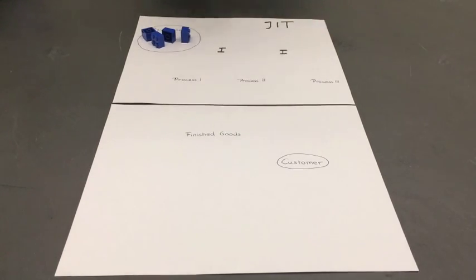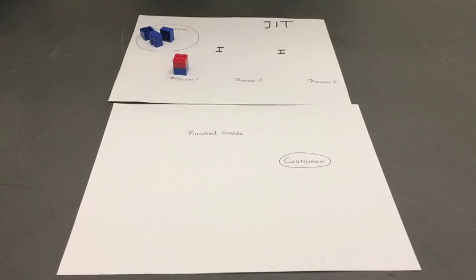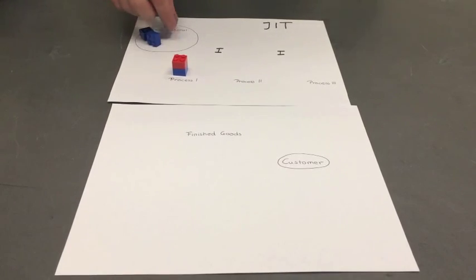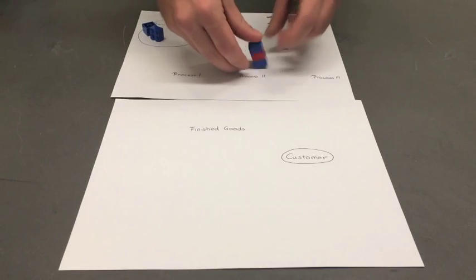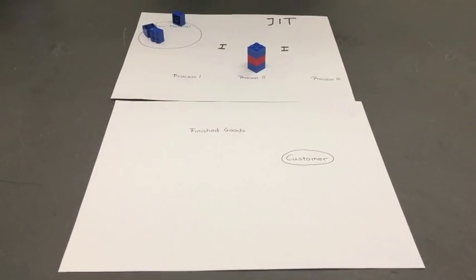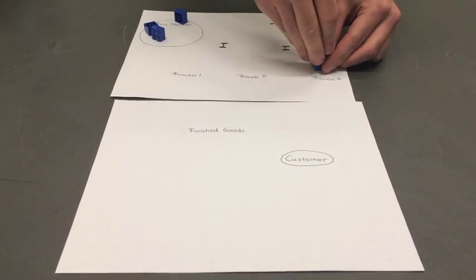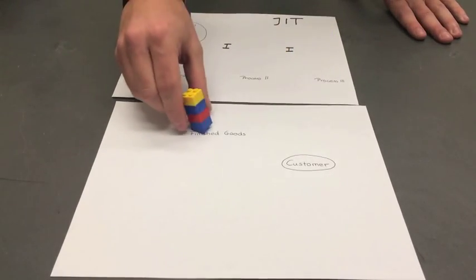In the first process, one Lego is added. In the second process, another Lego is added. And in the third and final process, a fourth Lego is added, which is then a finished good and can be delivered to the customers.